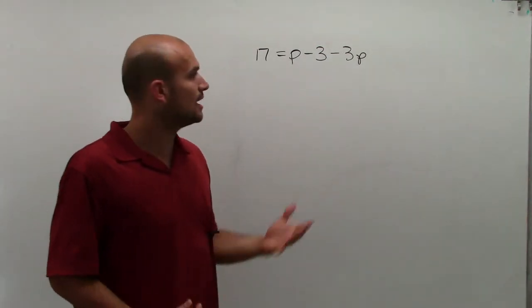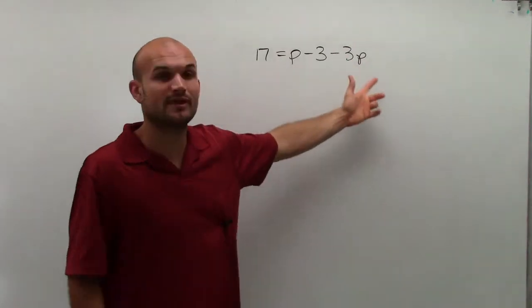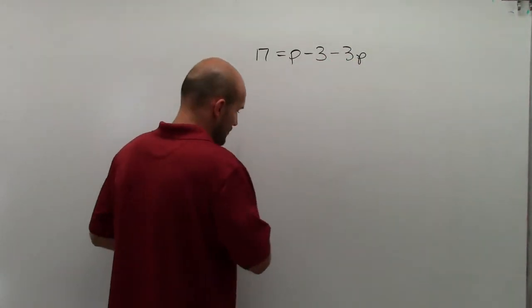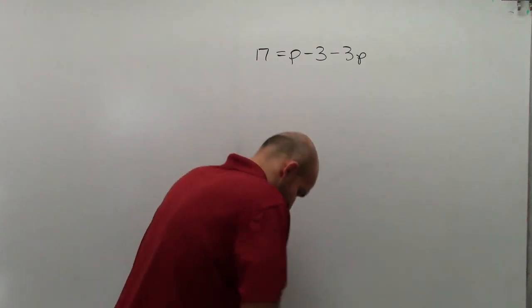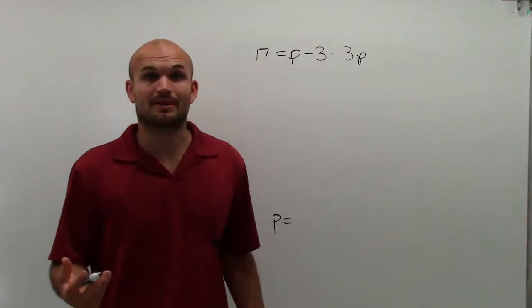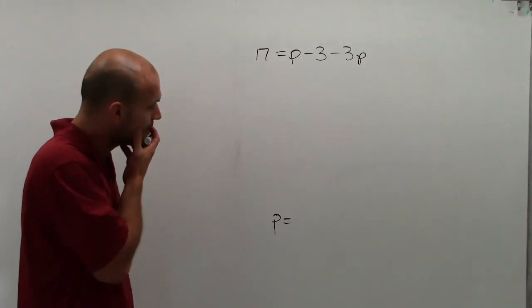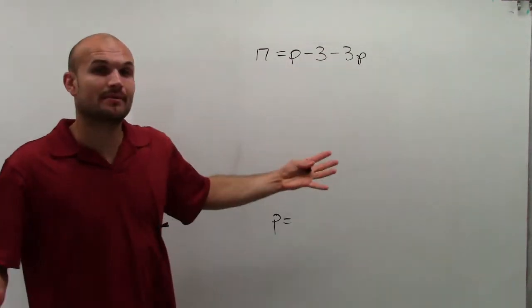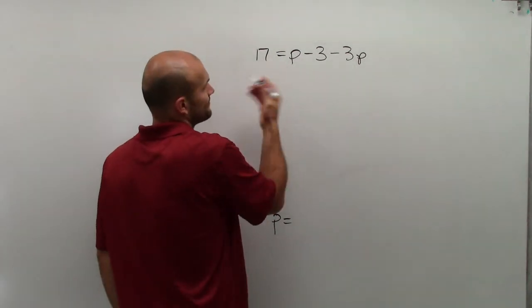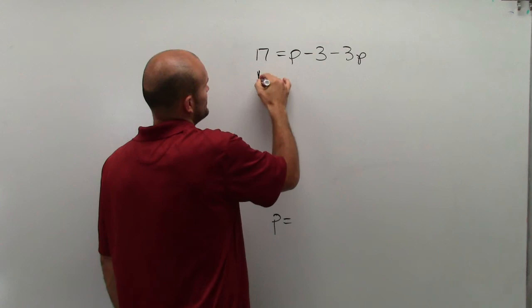So to do that, right now I have a problem because I have two unknowns, I have two p's. I need to get that down to where I have p equals something. So I got to get these two p's together. So what I'm going to do is I am going to rewrite this so I have my p's that are next to each other.